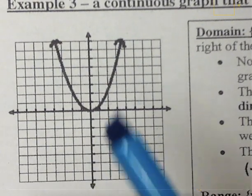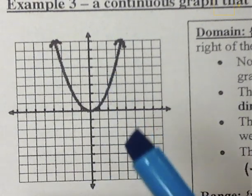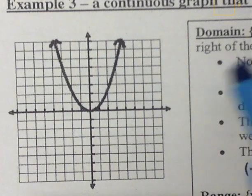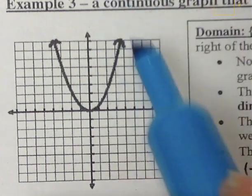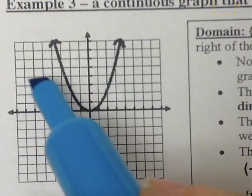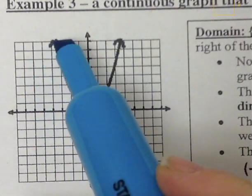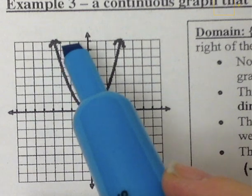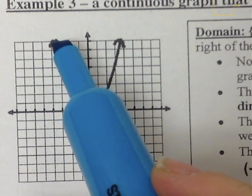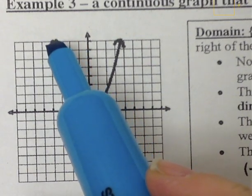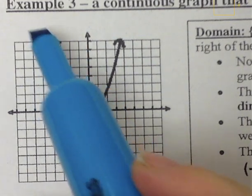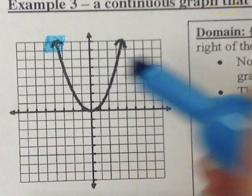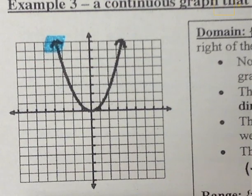So for the domain, I want to highlight the point that's farthest to the left. If I look over here on the left, I have an arrow that's pointing to the left. Since it's pointing to the left, it's going to keep going, so I'm going to highlight the arrow in this case.